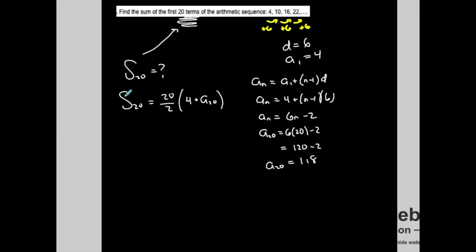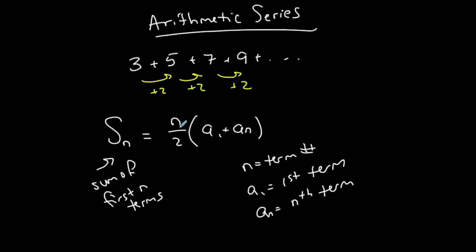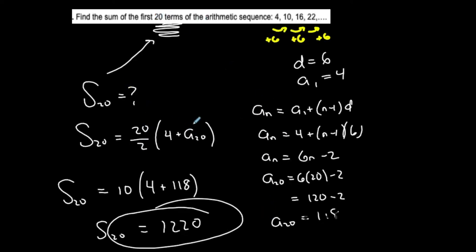Now I have everything I need to find the sum of the first 20 terms. S20 = 20 over 2 times (a1 + a20), which is 10 times (4 + 118). If I were to write out the first 20 terms of this sequence and add them all up, I would get 1220. Using this formula is much faster than writing out 20 terms. Once we know n and the first term, we just need to figure out the nth term.